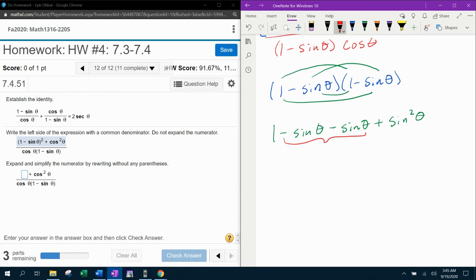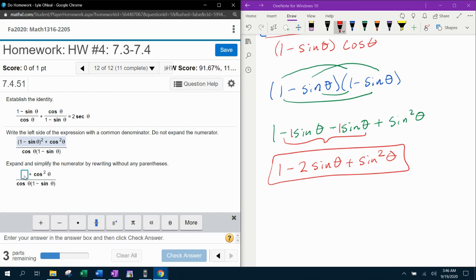And then we need to combine like terms. So I've got two negative sine thetas. That's an understood coefficient of one. Negative one and negative one is negative two. Sine theta plus my sine squared theta. All of that should be what they want in this box here.